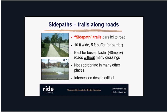Side paths work well on higher-speed roads in the suburbs — 40 to 45 miles an hour — that tend to have good access control, meaning not many side streets or commercial driveways interrupting the path. However, they have real problems at intersections, which I'll show in the next slide. This treatment is not ideal in a dense urban core with 30 mph travel speeds and lots of driveways and side streets.